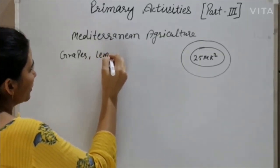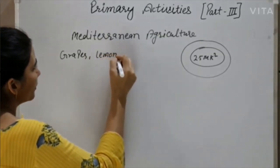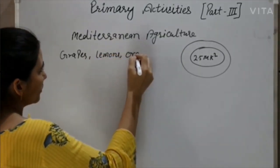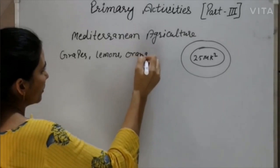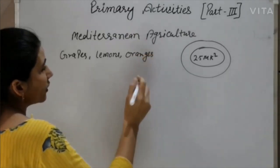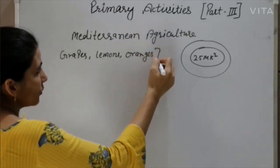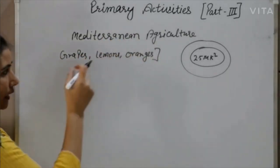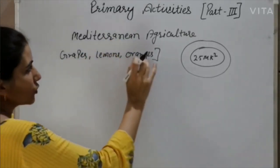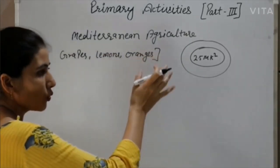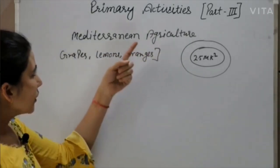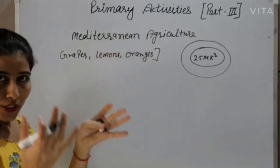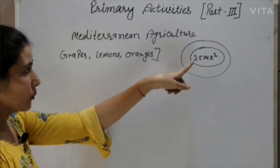Citrus fruits grown in Mediterranean agriculture include lemon and orange.